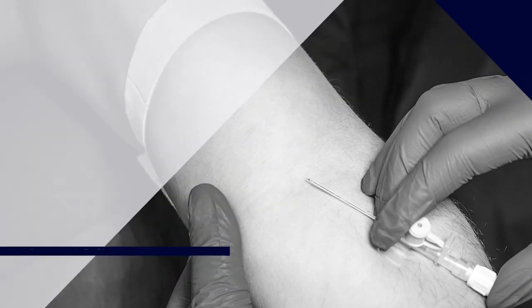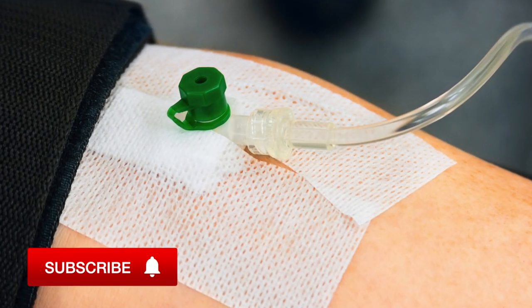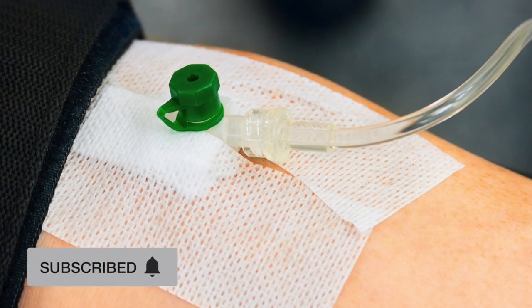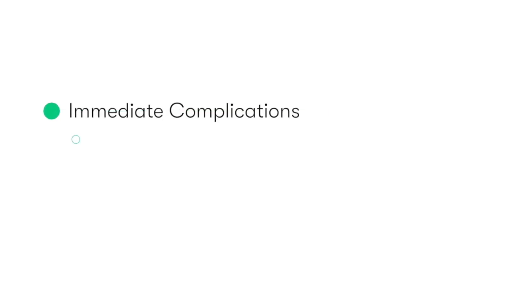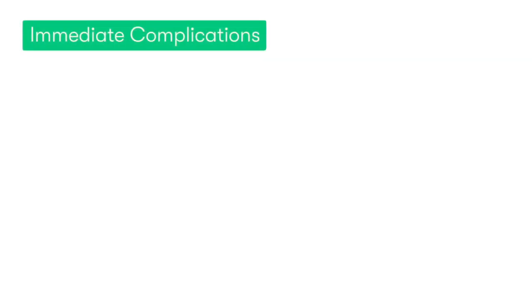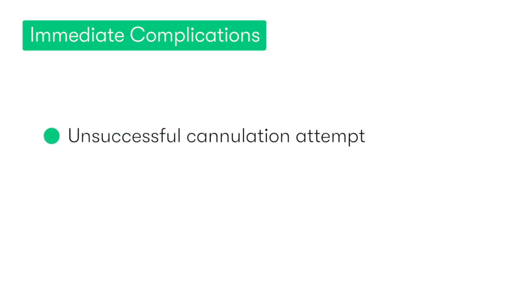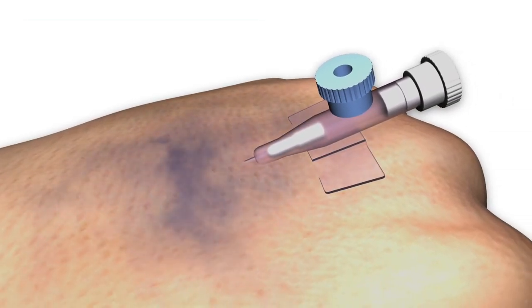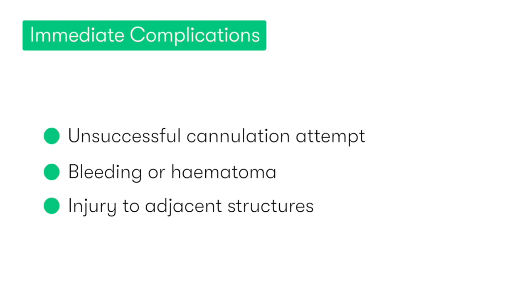Whilst peripheral venous cannulation is a minimally invasive and commonly performed procedure, it is associated with the occurrence of specific complications that it's important to be aware of. These complications can be divided into two groups: immediate complications, or those associated with the actual insertion process, and late complications, which are those associated with the presence of the catheter itself. In terms of immediate complications, we have being unable to successfully cannulate the vein, bleeding or haematoma formation, which are typically associated with the unsuccessful cannulation attempt. We also may cause injury to adjacent structures such as blood vessels or nerves.